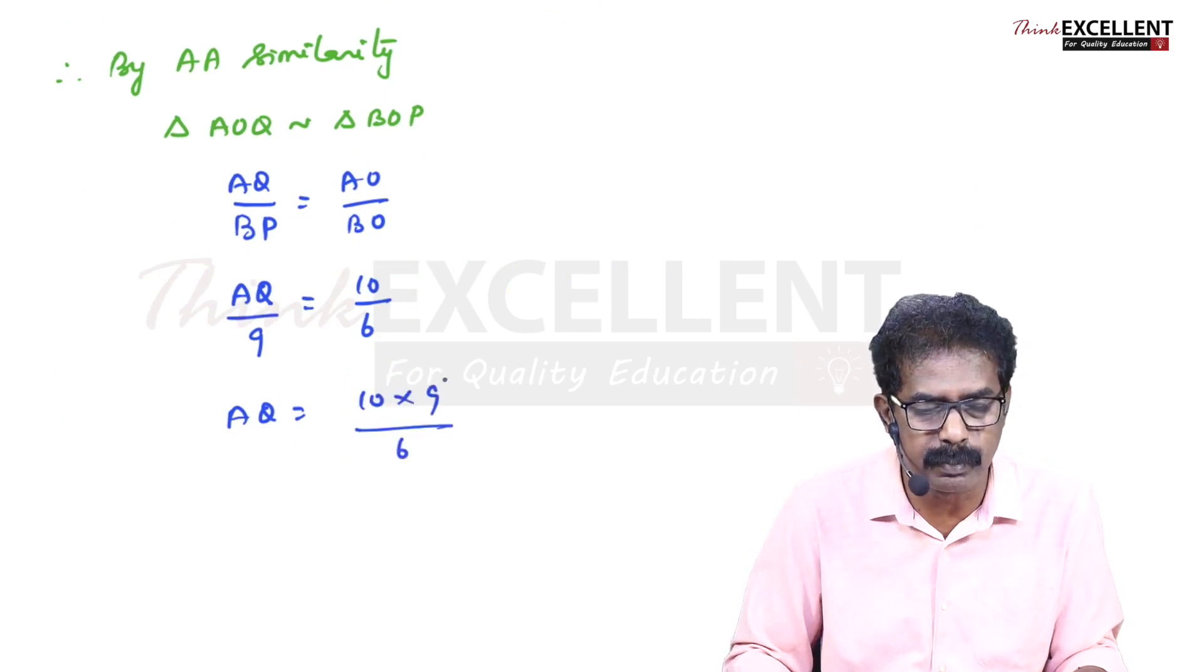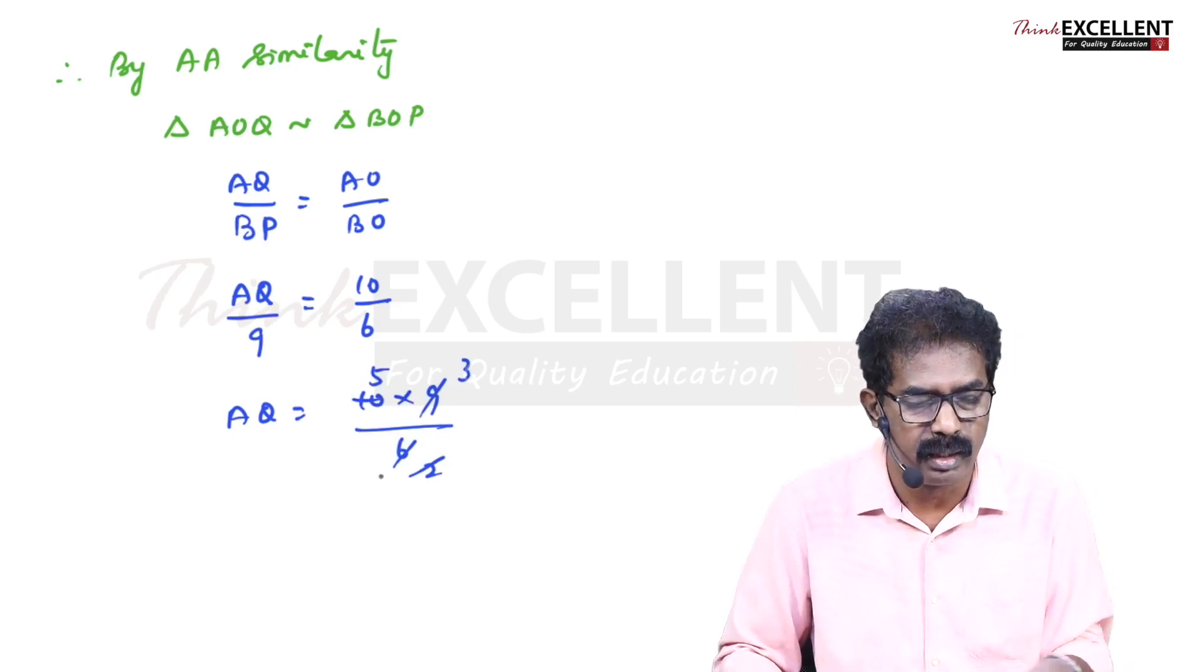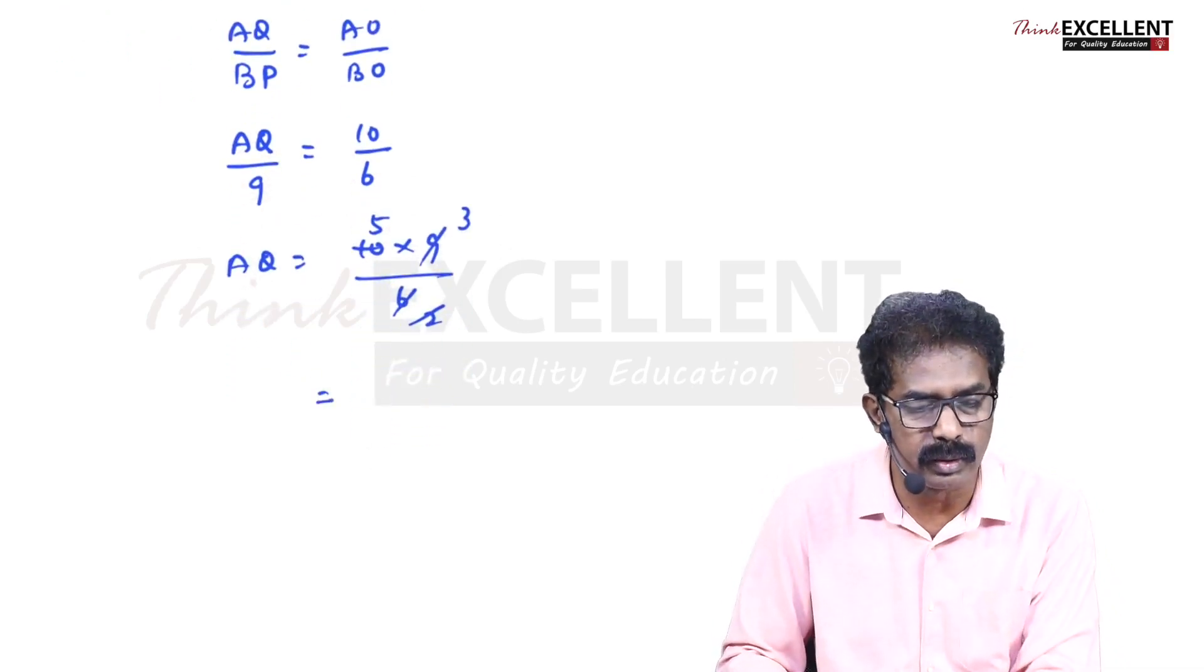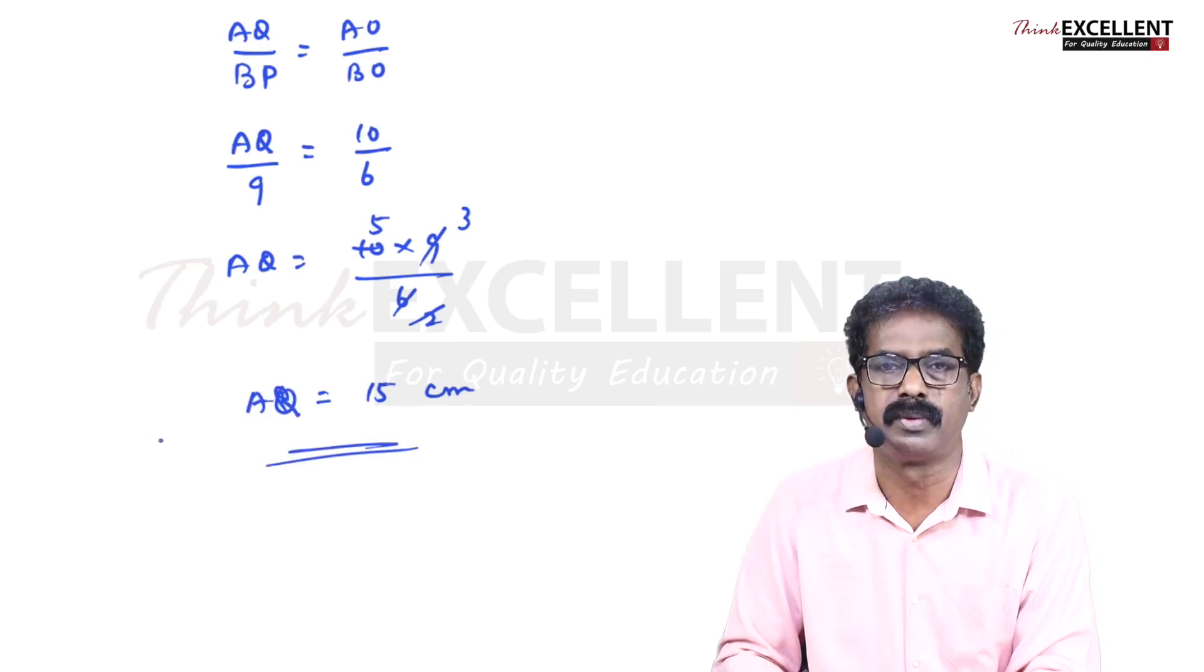3 table you cancel, 3 3s here. 2 table you cancel. 5 times 3 is 15. So your answer is 15 cm. AQ equals 15 cm. Hope you understood this.